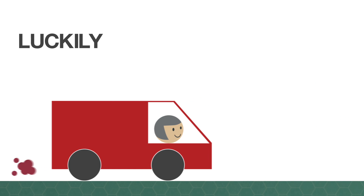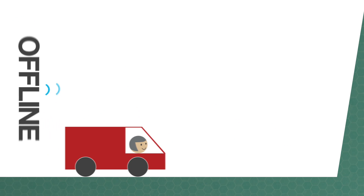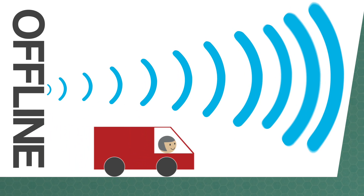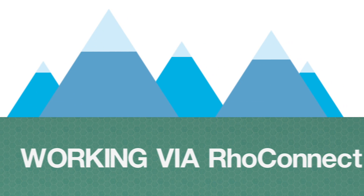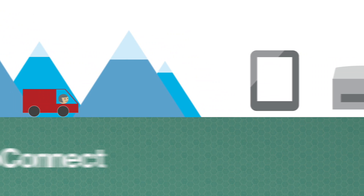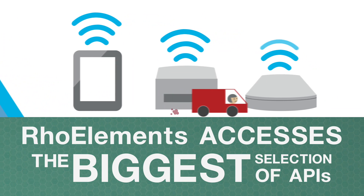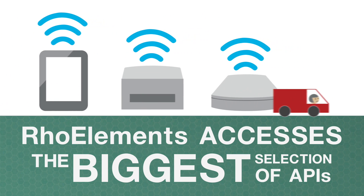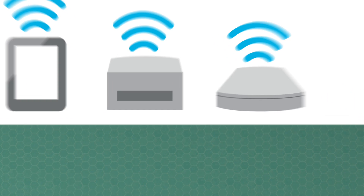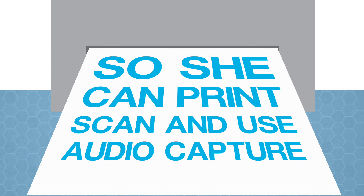Luckily for Barbara, ROE Mobile Suite works online as well as offline, so she can carry on working via ROE Connect and ROE Elements, which accesses the biggest selection of APIs that no one else can manage, letting her print invoices, scan orders, and even use audio capture.